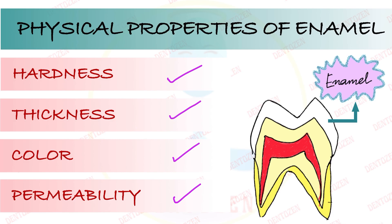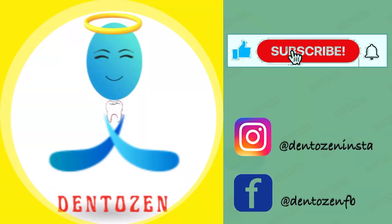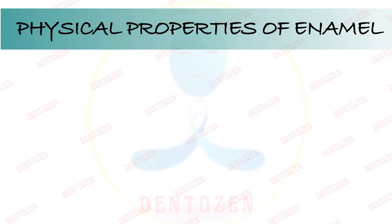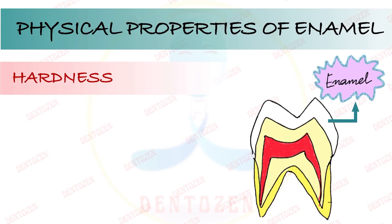In this video we are going to discuss all the physical characteristics of enamel. Before we begin, I want you to quickly subscribe to Dental Zen if you have not done that till now. Also hit the bell icon so that you remain notified about new videos. First property: hardness.